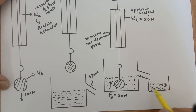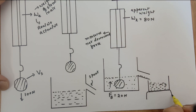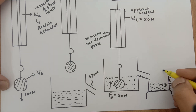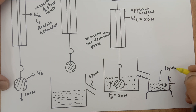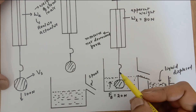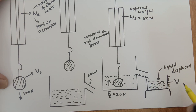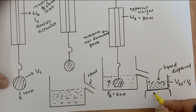When you completely immerse the stone, some amount of water or liquid overflows out and gets collected. I am going to keep a weighing machine under it. This is a beaker which contains graduations on it, so we can measure the volume of the liquid displaced. This liquid is known as the liquid displaced, and the volume of liquid displaced is equal to the volume of the stone. We also record the weight of the liquid displaced.